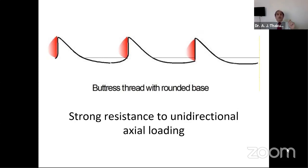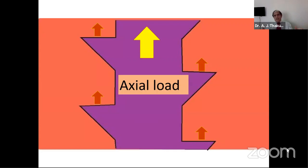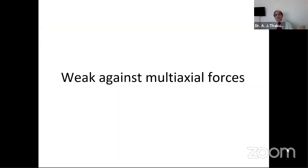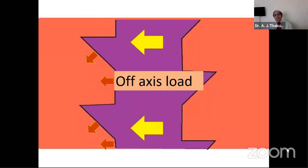The buttress thread offers very strong resistance in one-directional axial loading — a very good hold during pullout or in the opposite direction. This was an improvement on the V-thread used before. For a long time orthopedic fraternity thought this was the ultimate shape. But it has problems — it is weak against multi-axial forces. If loaded sideways, only two or three contact spots remain.